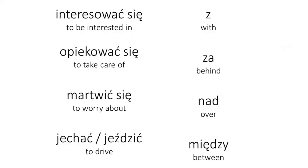So when do we use Narzędnik? We use it after verbs like interesować się, opiekować się, martwić się, jechać, jeździć. And after some prepositions — for example: z, za, nad, między.